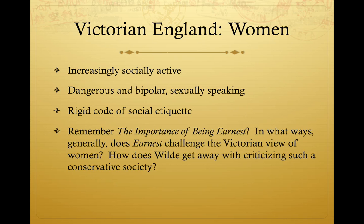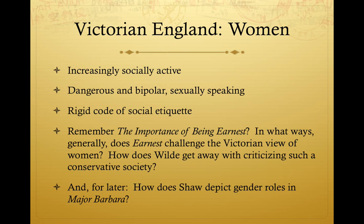We all read The Importance of Being Earnest in Aesthetics 2. Think about in what ways Earnest challenges this Victorian view of women, and how Wilde gets away with it — because he criticized Victorian society quite a lot and did a good job of getting away with it. When we get to Shaw and Major Barbara, consider how he handles gender roles. Both Shaw and Wilde are relatively progressive when it comes to women. Think about Major Barbara as a proactive feminist character — is she or isn't she, and what criticisms can you bring to the idea of Major Barbara as a feminist play?